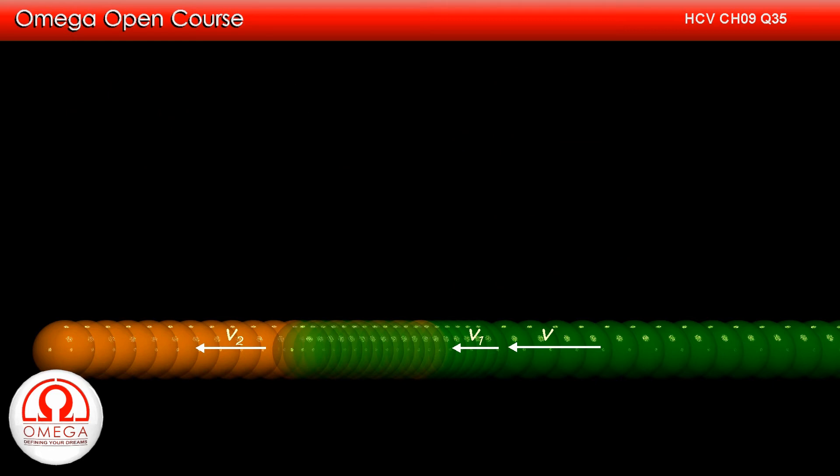The final kinetic energy of the balls is half MV1 square plus half MV2 square, which as per question is three-fourth of the initial energy of the system. Since initially only green ball was moving and its speed was V, the initial kinetic energy of the system is half MV square.